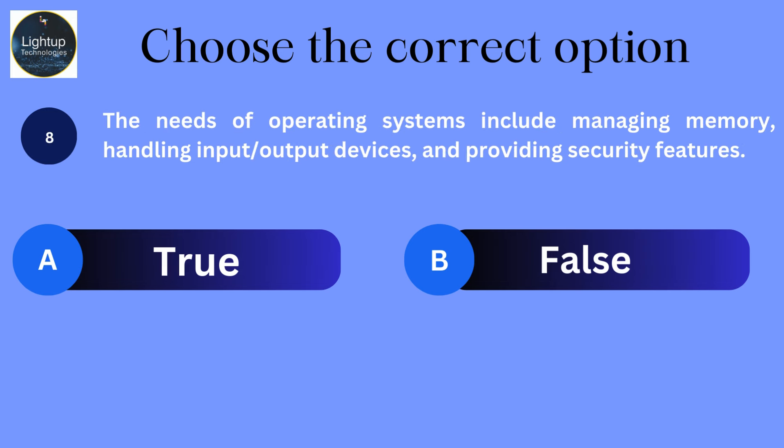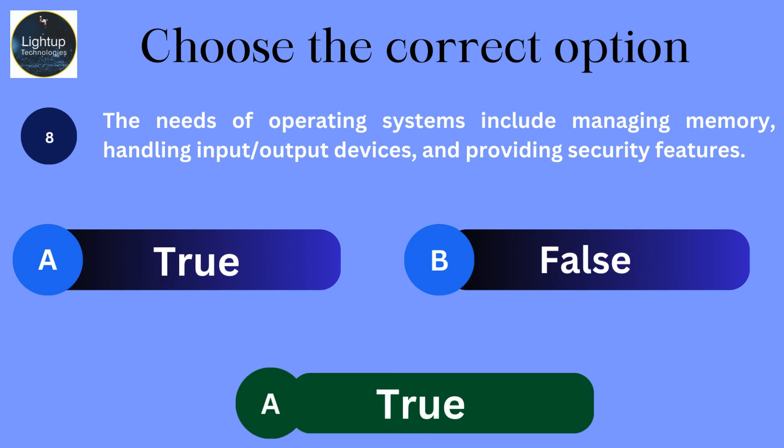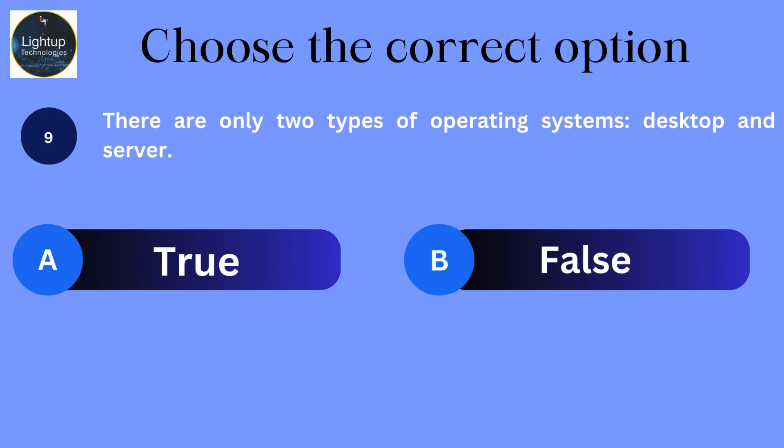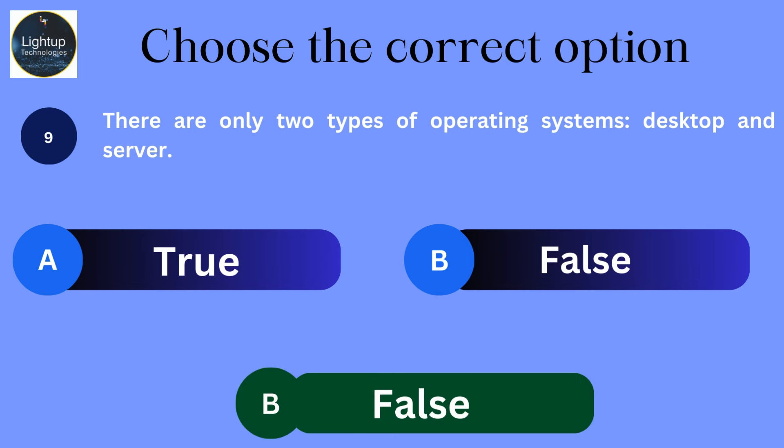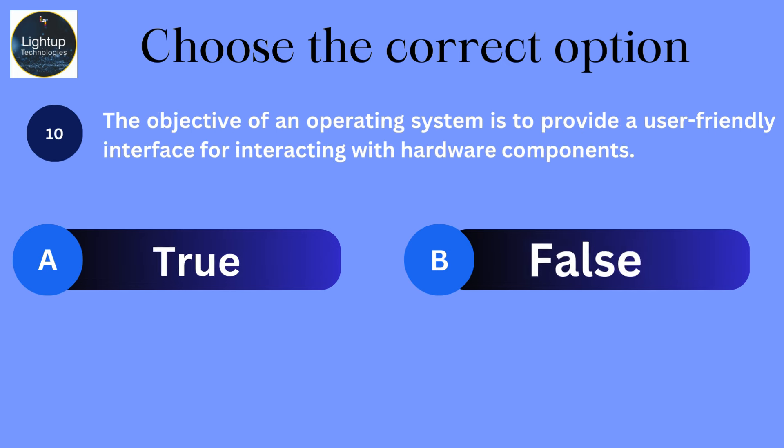The needs of operating systems include managing memory, handling input-output devices, and providing security features. There are only two types of operating systems: desktop and server. The objective of an operating system is to provide a user-friendly interface for interacting with hardware components.